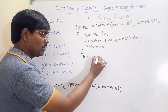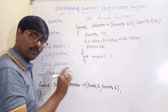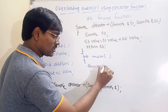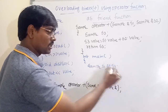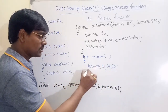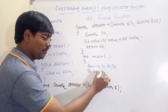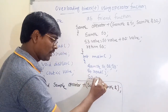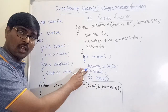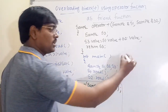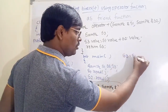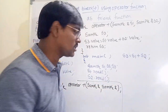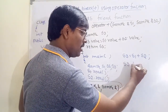In the main function, we create three objects: sample s1, s2, s3. We call s1.read() and s2.read() to read values into s1 and s2. Then: s3 = s1 + s2 performs the addition. Finally, s3.display() shows the result.